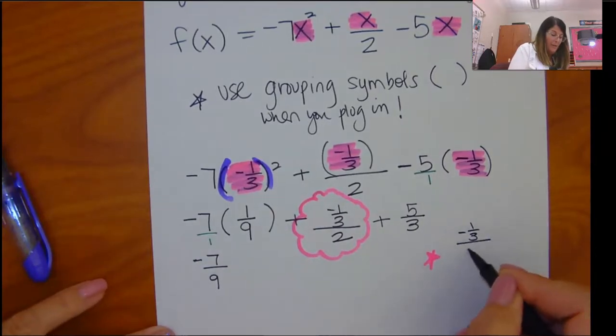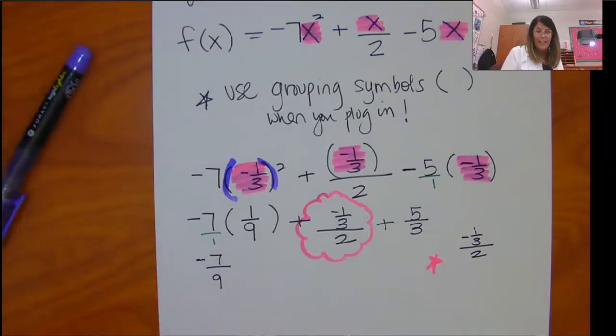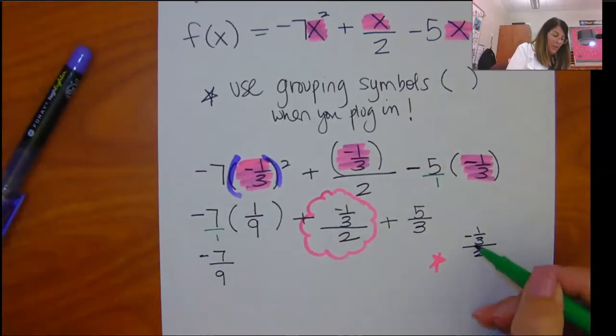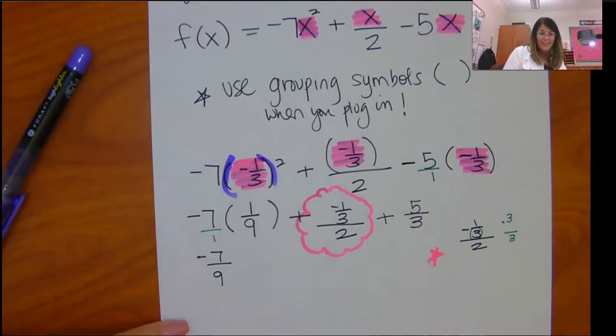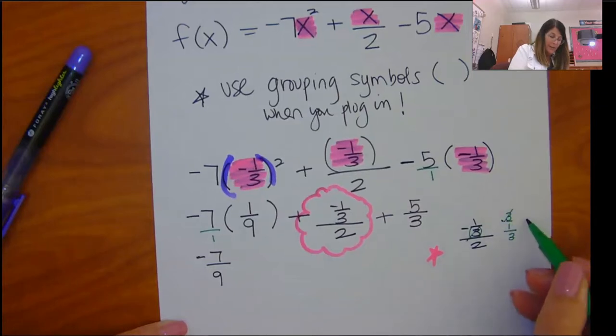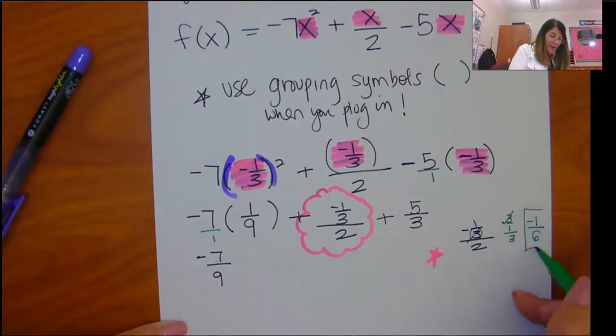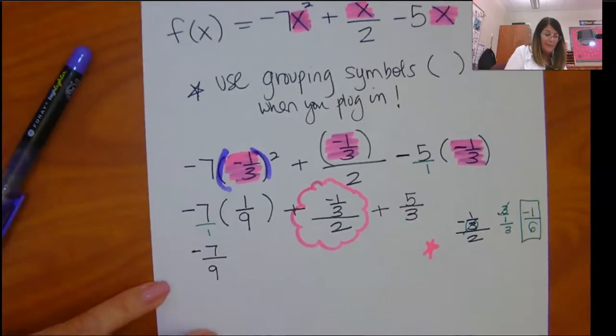So I have negative 1 third over 2. So there's a couple different ways I can deal with this. I can look at the denominator here. And I can multiply by 3 over 3 and change the way this looks. This is kind of like a 3 over 1. And that will cancel and will give me a negative 1 sixth. Now, that's going to be the answer. But there are multiple ways to deal with this.